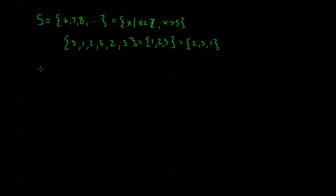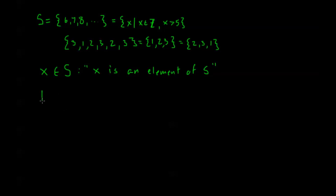Now another little review on notation. Remember we have this element sign — this curvy E-looking thing. If I have X as an element of some set S, this means 'element of,' meaning X is an element of S, or in other words X is in the set S. We also have this subset notation: T ⊆ S. When we read this, we say T is a subset of S, which means every element in T is an element in S.